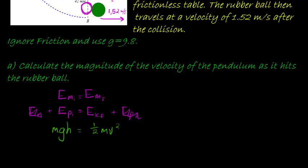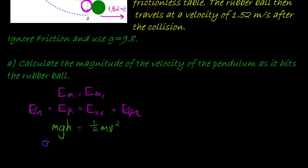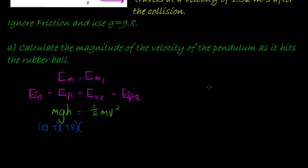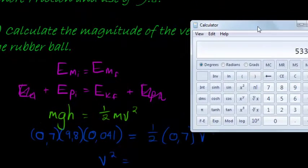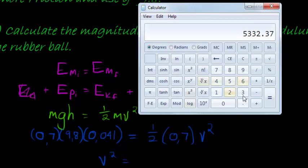We can divide mass from both sides, since mass doesn't affect an object's velocity when falling. So 9.8 is gravity, the height is 41 mm — remember, millimeters must be divided by 1000 to get 0.041 m. This equals a half times 0.7 times velocity squared.